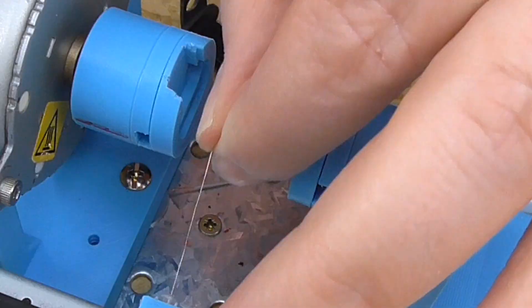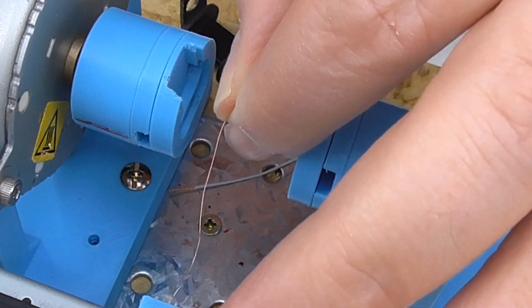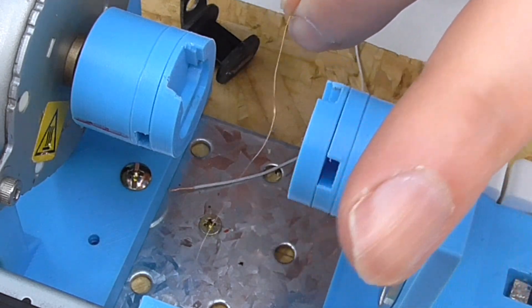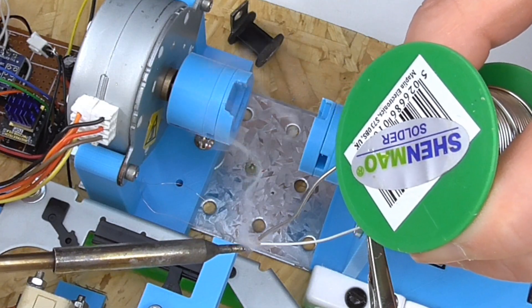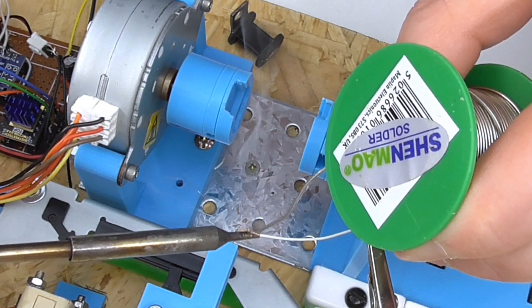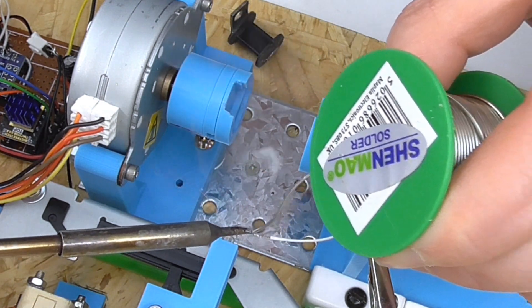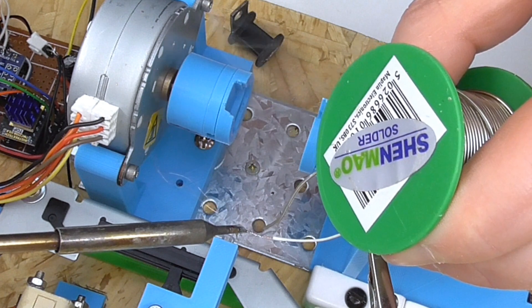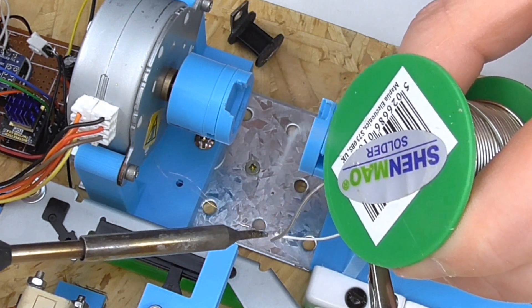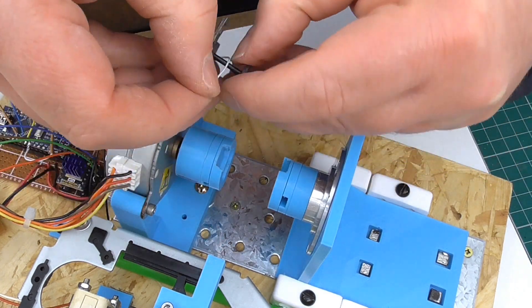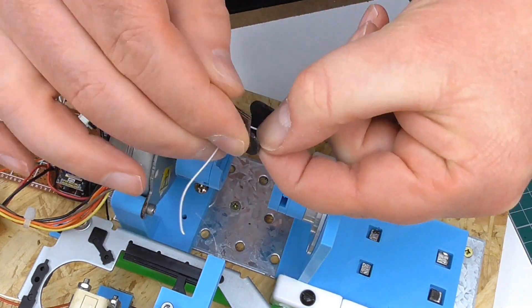Now time to thread the machine up. The thin coil wire needs to be soldered onto some slightly thicker wire. This thicker wire goes onto the spool first and out the edge.